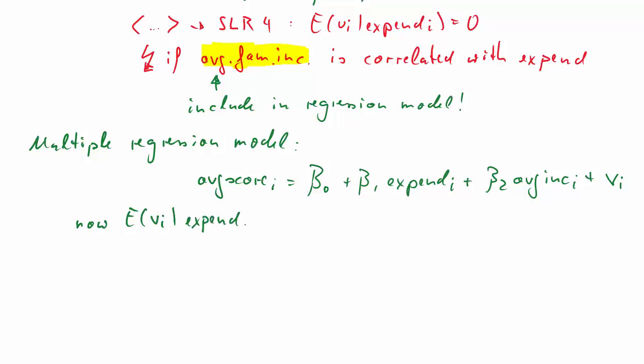We will now have to assume, that's now our multiple linear regression assumption 4, the zero conditional mean assumption, that this new error term Vi is uncorrelated to expenditure and average income, or the expected value conditional on any value of these two variables is zero.